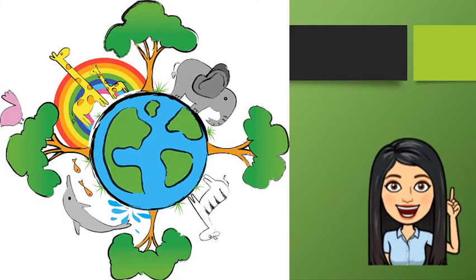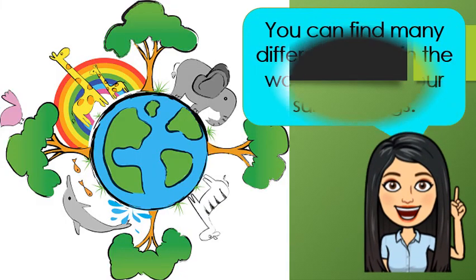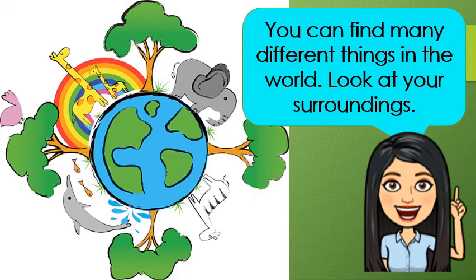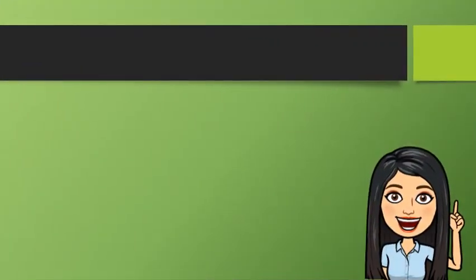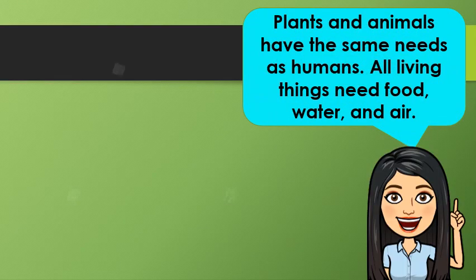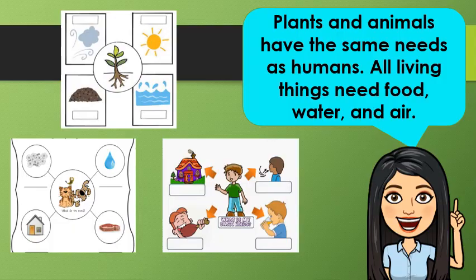Children, I want you to look at your surroundings. You will observe that you can find many different things in our world. Every living organism on Earth needs some basic things to survive. The amount, way, form, or kind of these needs vary from organism to organism. Plants and animals have the same needs as humans. All living things need food, water, and air.